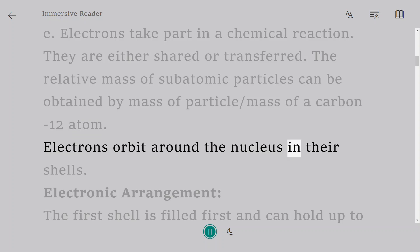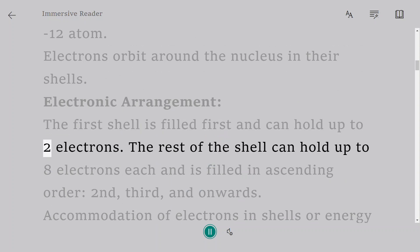Electrons orbit around the nucleus in their shells. Electronic Arrangement: The first shell is filled first and can hold up to two electrons.